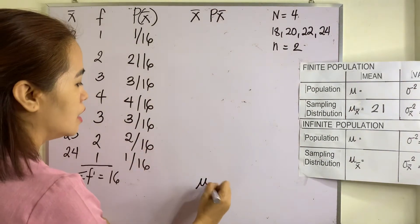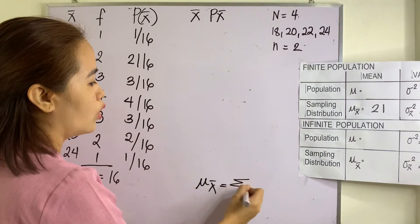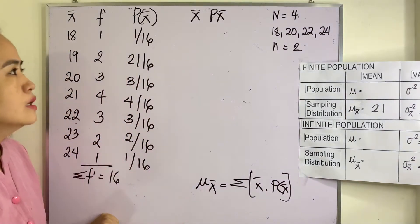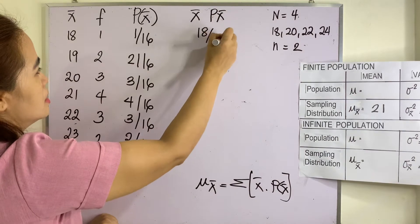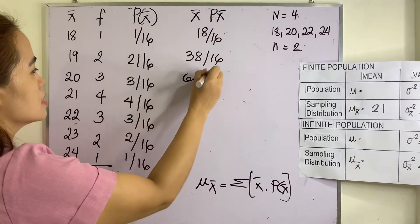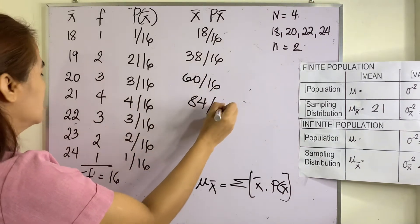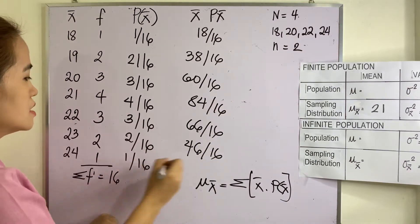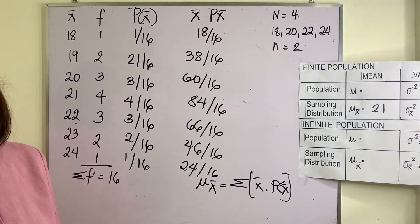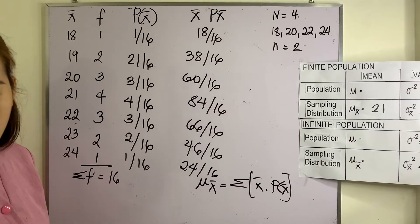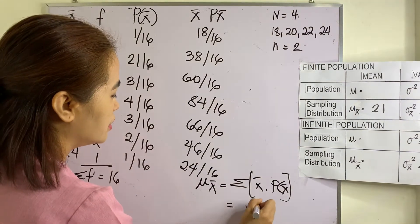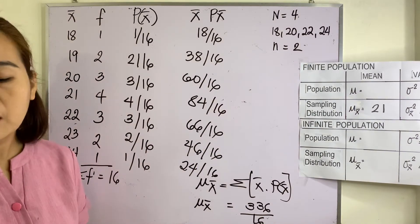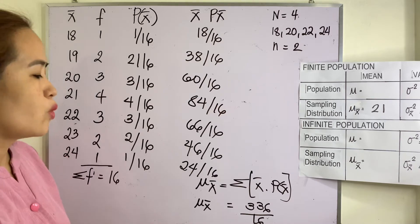The formula for the mean is equal to the summation of x-bar multiplied by the probability of the sample mean. So we multiply these: we have 18 over 16, 38 over 16, 60 over 16, 84 over 16, 66 over 16, 46 over 16, and 24 over 16. The sum is 336 over 16. Dividing 336 by 16 gives us 21, so our mean is 21.